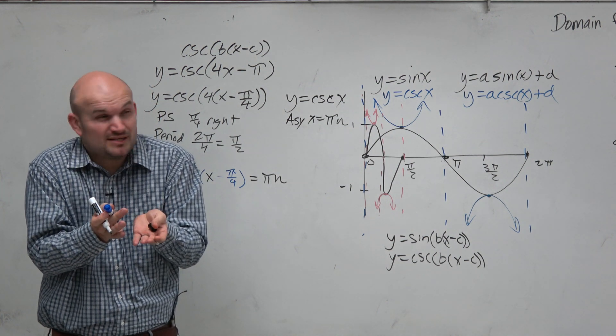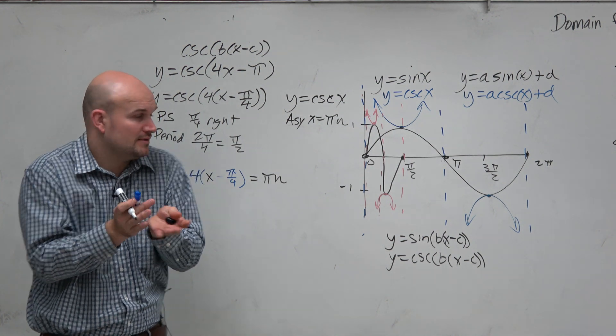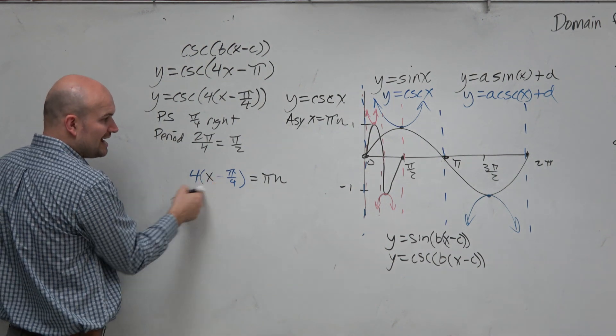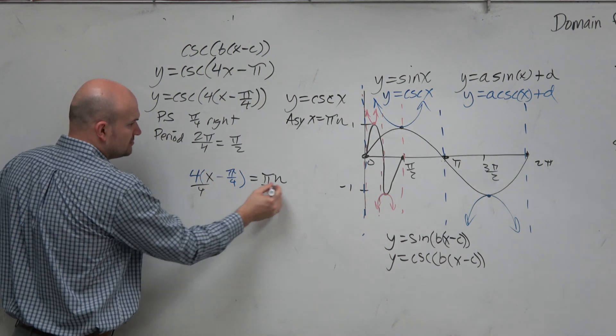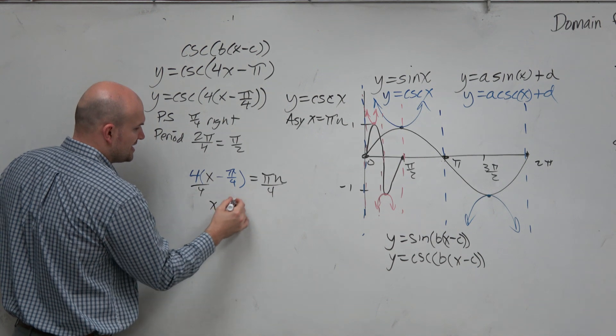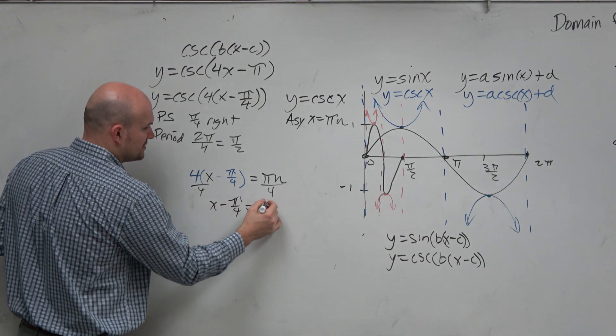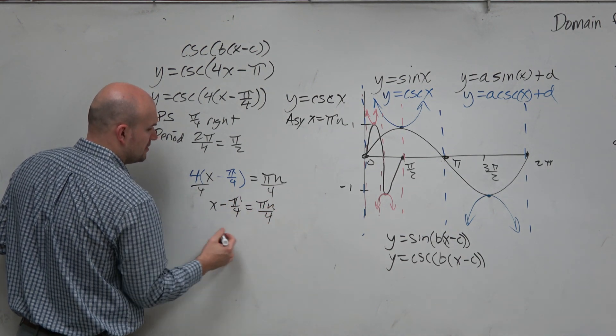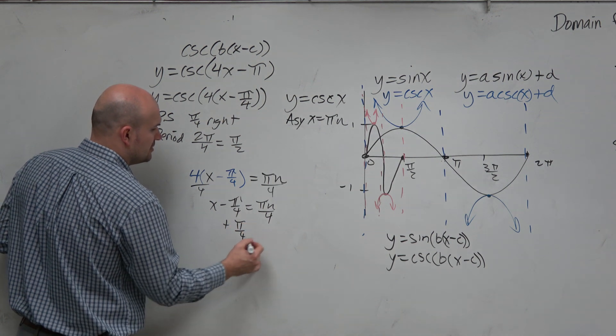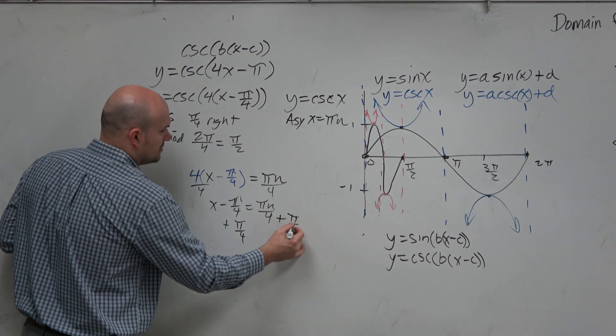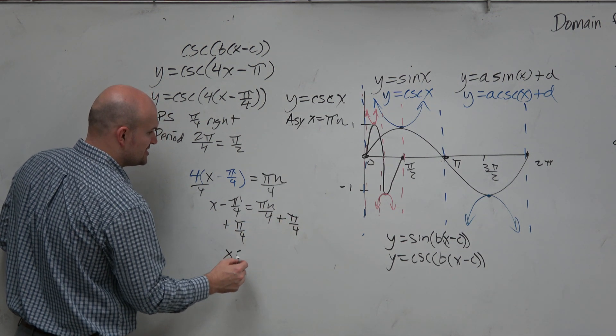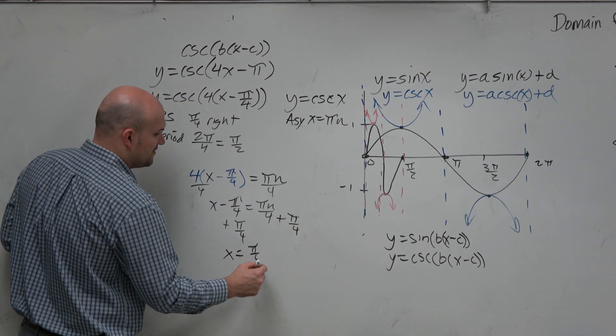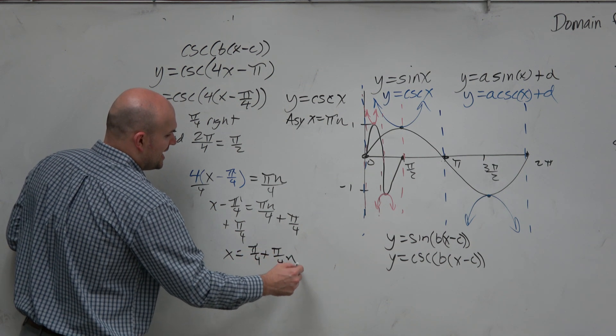Does that make sense? Because it's on your quiz. So falling asleep probably won't help, right? So now we just go ahead and solve for x. So we divide by 4. Divide by 4. x minus pi over 4 is equal to pi n over 4. And then we add pi over 4. Add pi over 4. So our asymptote equation is x equals pi over 4 plus pi over 4n.